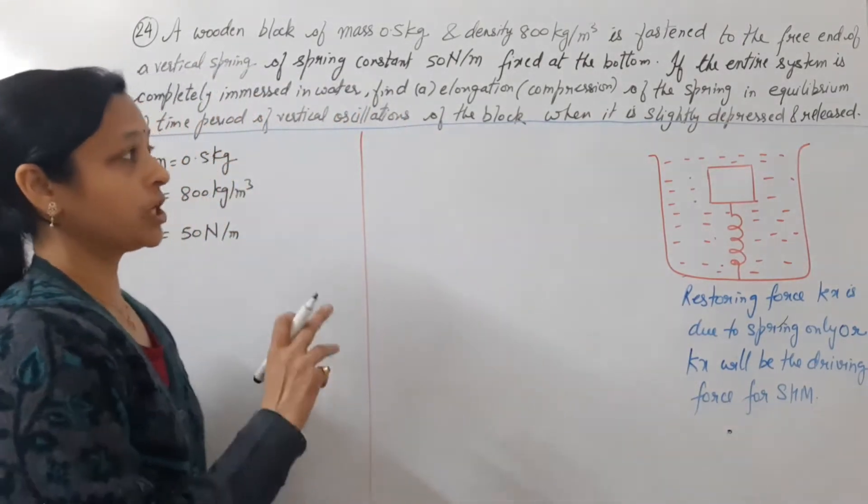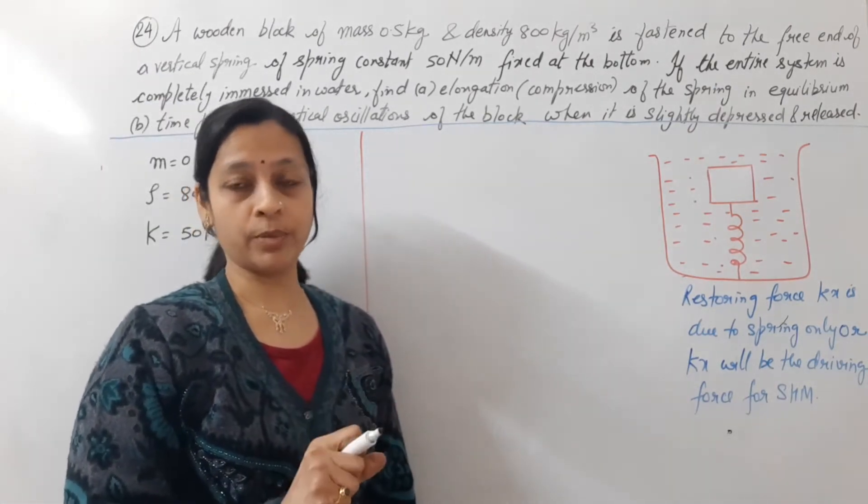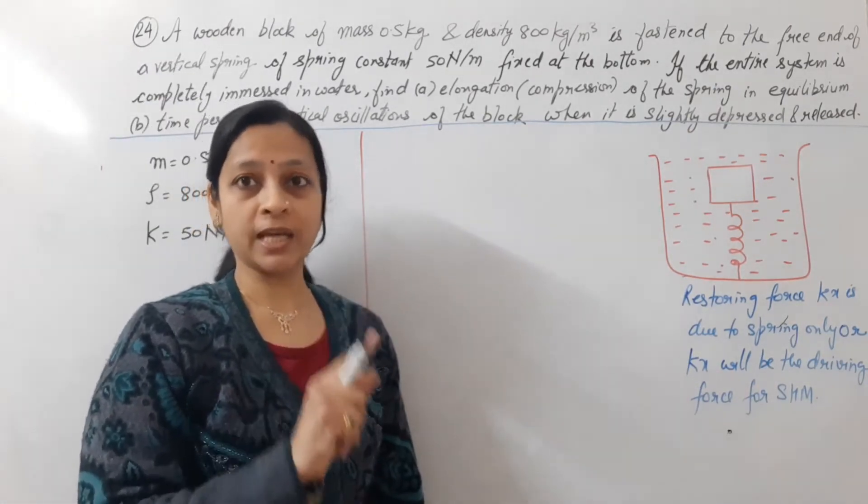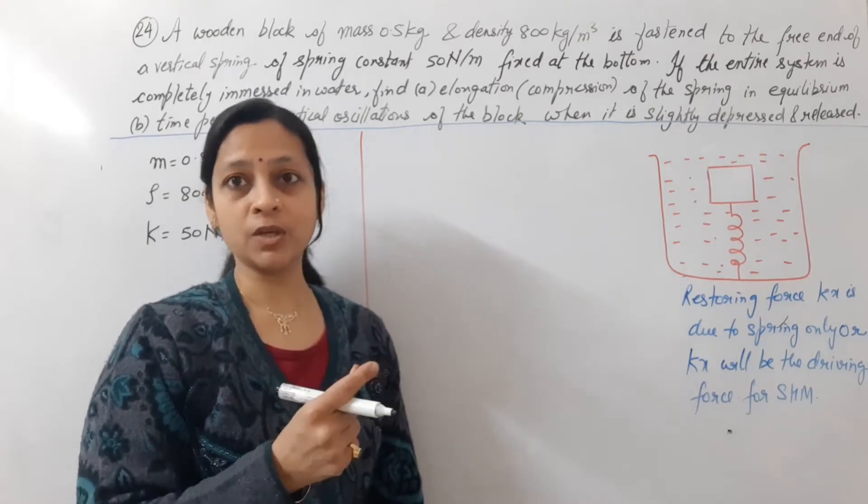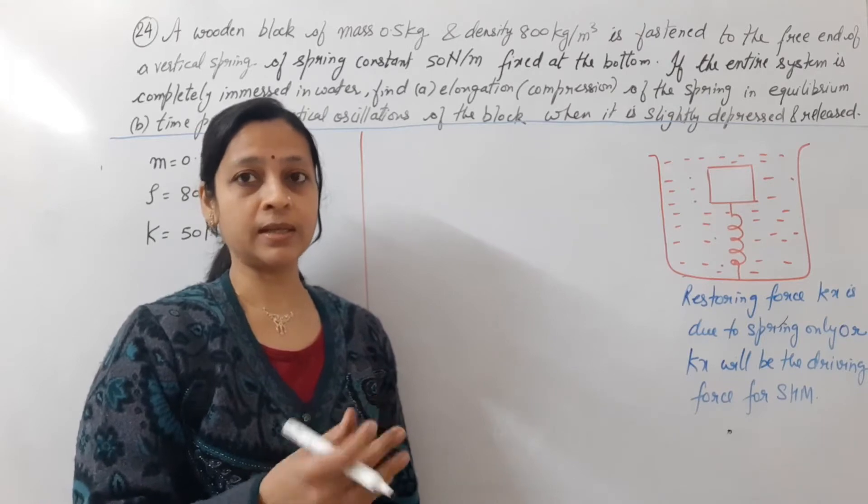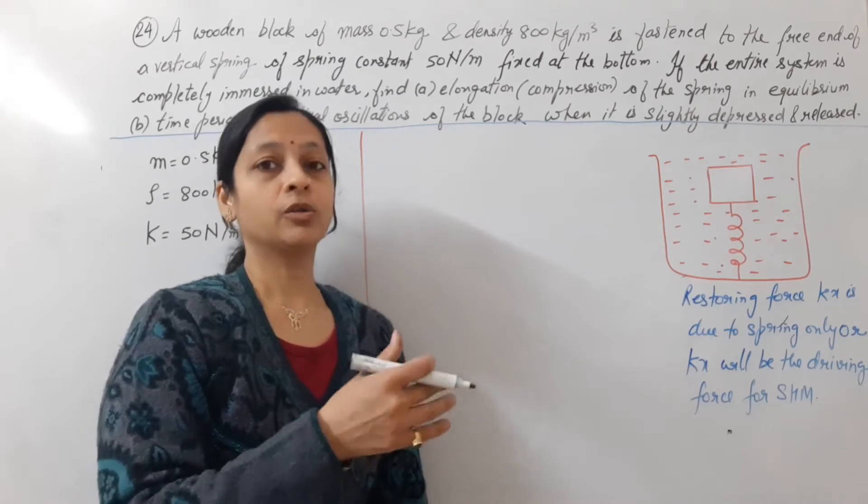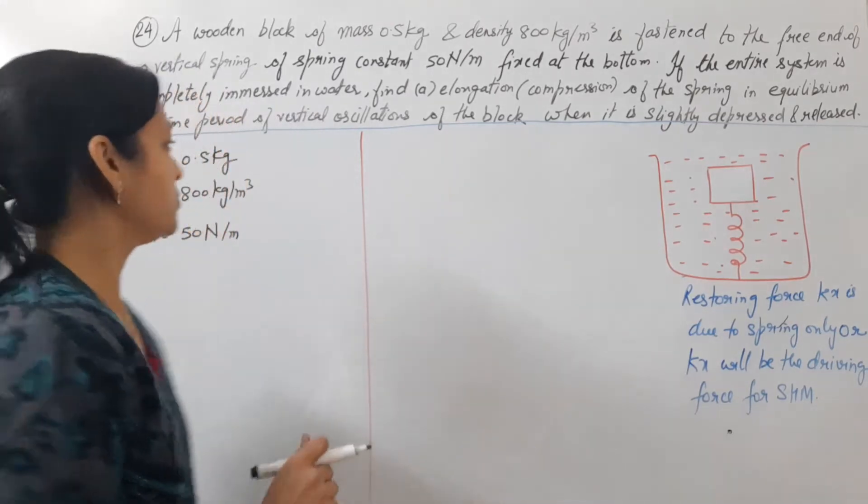In the first case, we have to find the elongation or compression. Now we do not know that it will be elongation or compression, so we will assume something. If our positive answer comes, suppose we assume compression and our positive answer comes, this means it will be compression. And if our answer is negative, this means it will be elongation. So we have to assume here. So we will start.